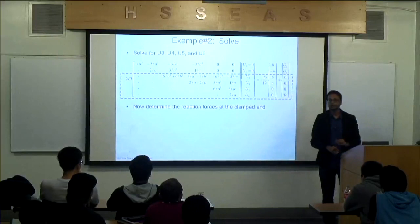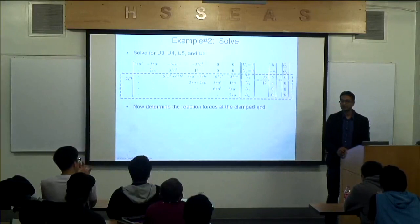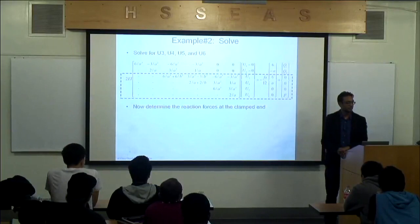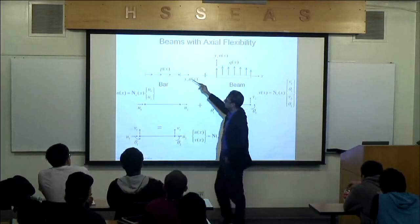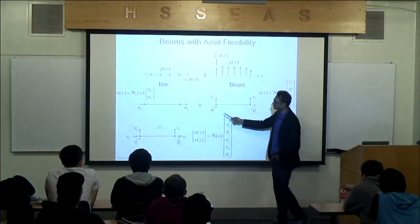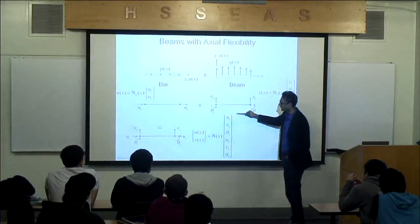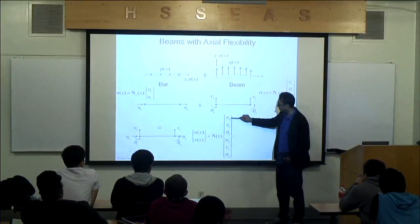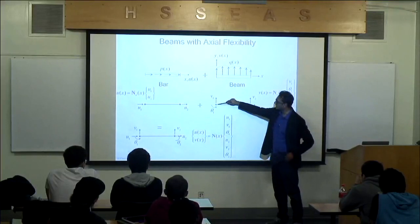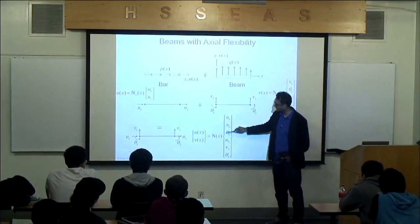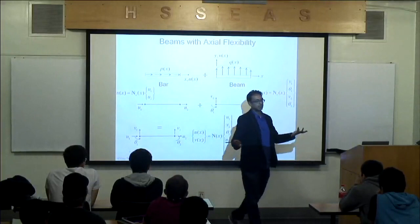This finite element approach is seamless — it handles determinate and indeterminate systems the same way. No need to set up multiple differential equations for each piece as in mechanics of materials. Now, what about axial flexibility? If a beam also has axial loading, I can combine the beam stiffness with the bar stiffness by superposition — adding U1 and U2 axial degrees of freedom to V1, theta1, V2, theta2.